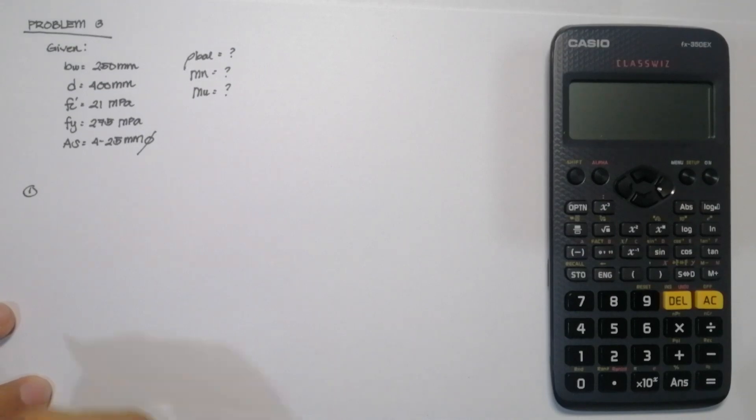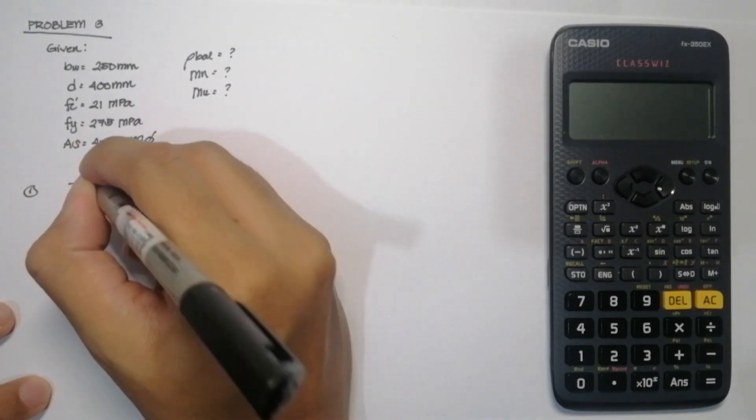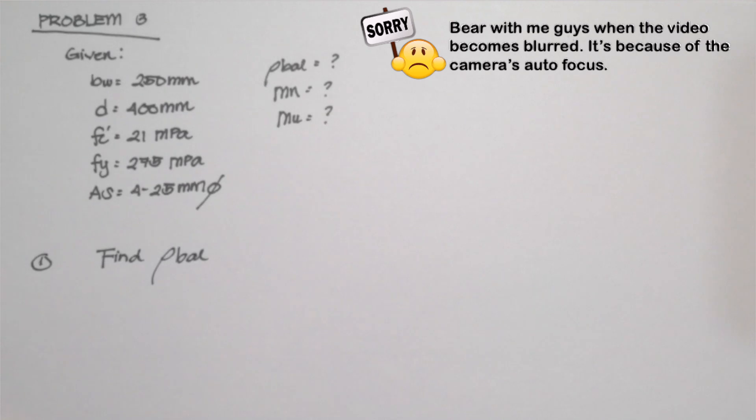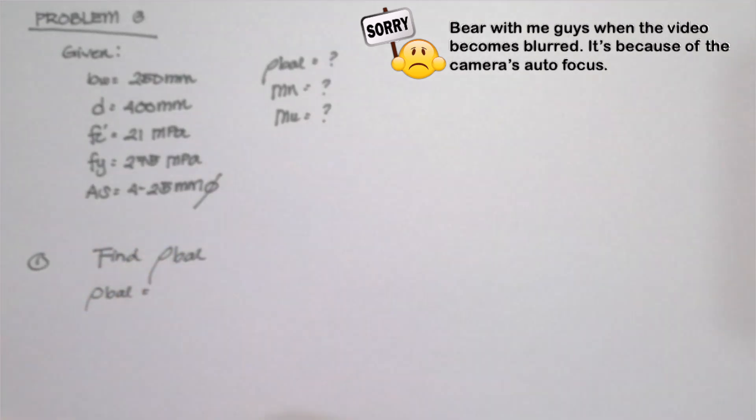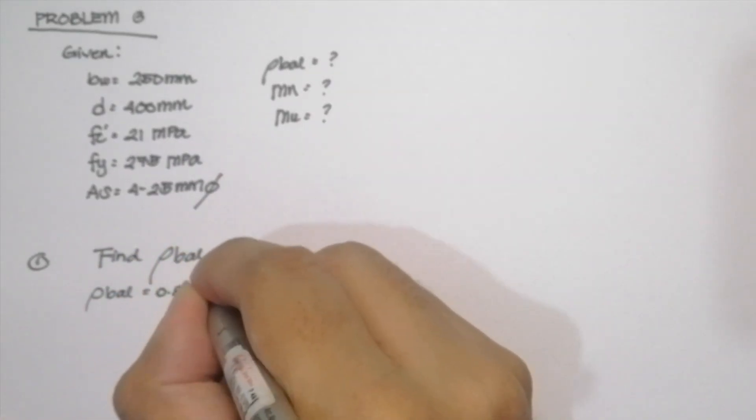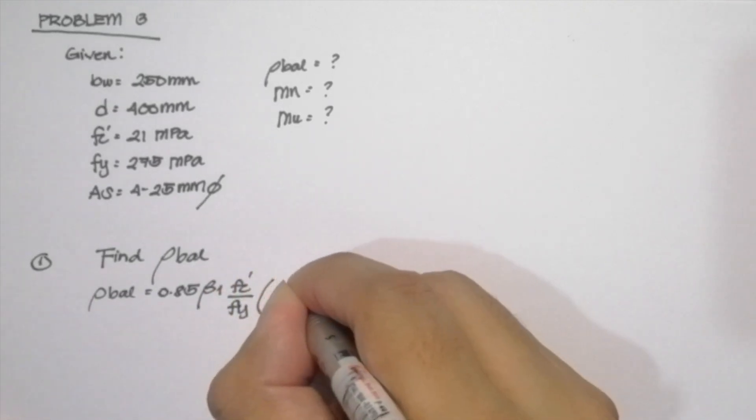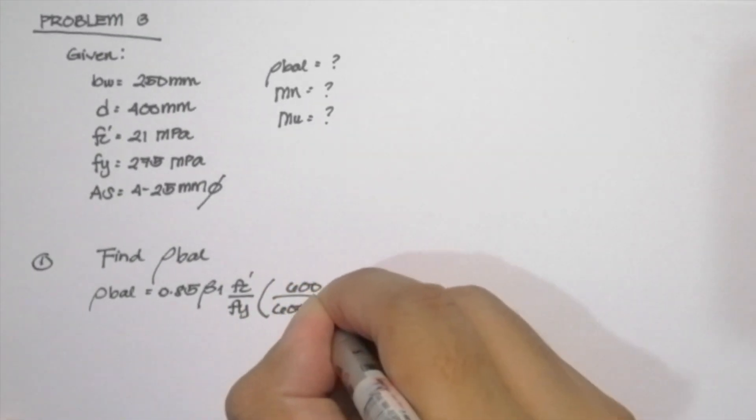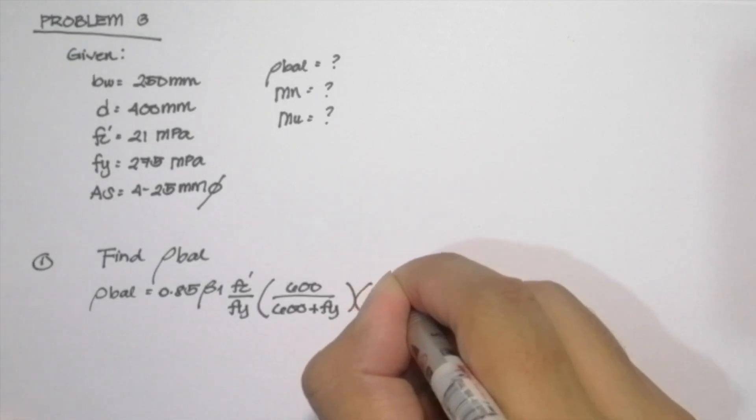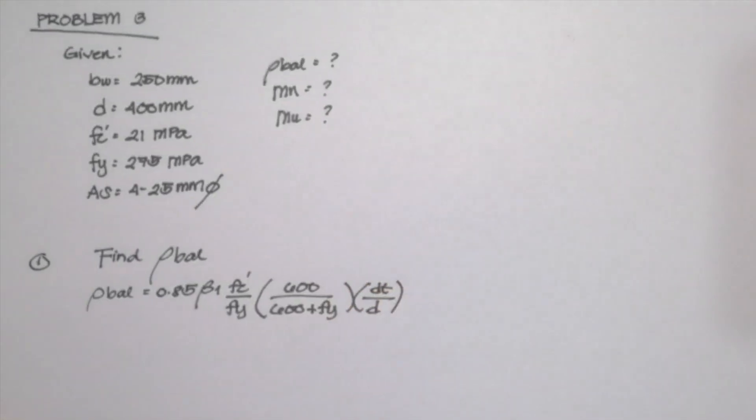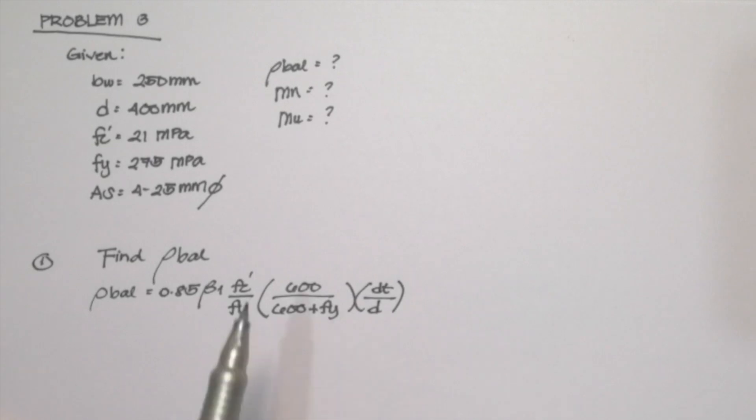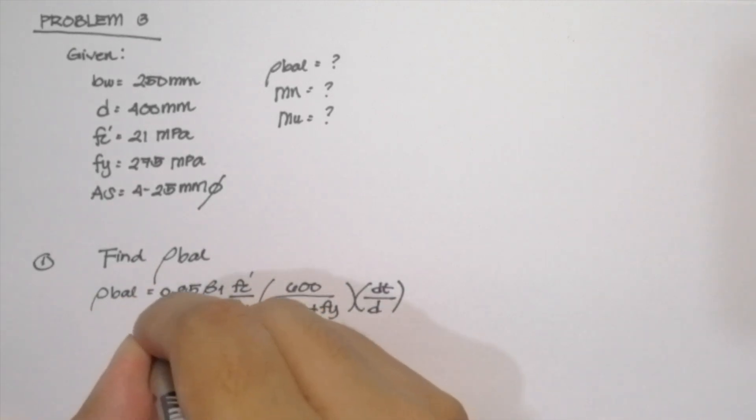So first step, finding the balance reinforcement ratio or what we call the rho balance. We can use the formula rho balance is equal to 0.85 beta 1 multiplied by fc prime over fy multiplied by 600 over 600 plus fy multiplied by dt over d. So you will notice our compressive strength is 21MPa, so it is automatically, the value of beta 1 will be 0.85 since the compressive strength is less than 28.